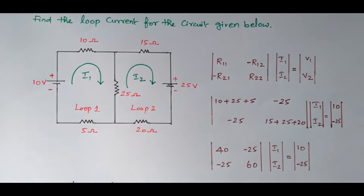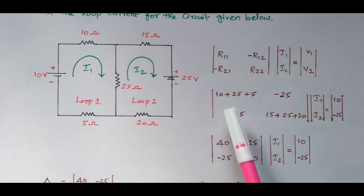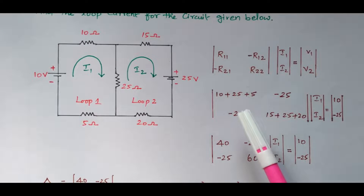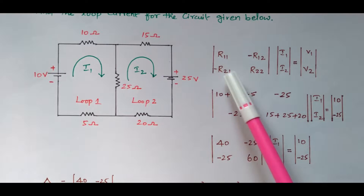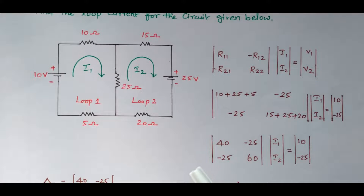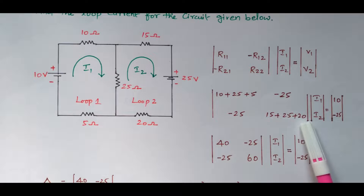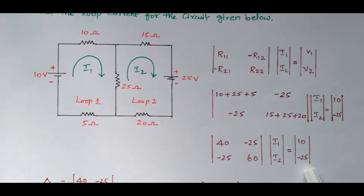Now we simplify the matrix. R11 = 10 + 25 + 5 = 40. The off-diagonal elements are always negative, so R12 = R21 = minus 25. R22 = 15 + 25 + 20 = 60. The current matrix is [I1, I2] and the voltage matrix is [10, minus 25].